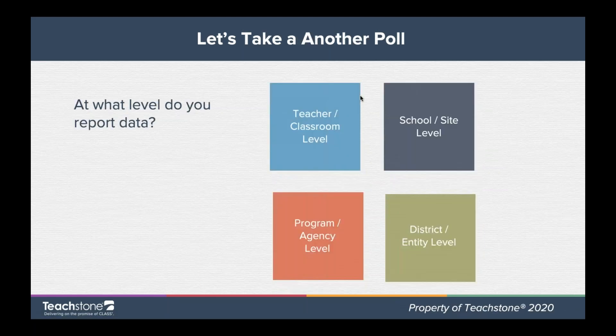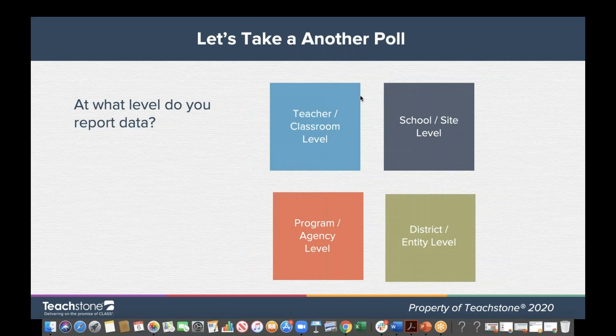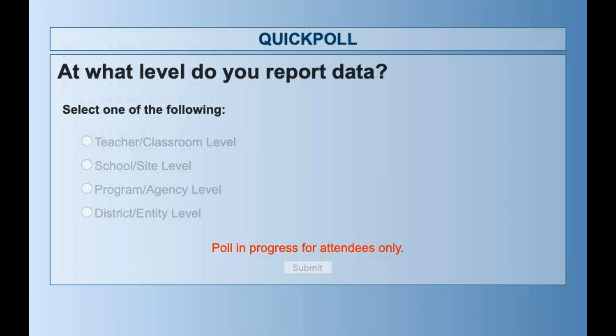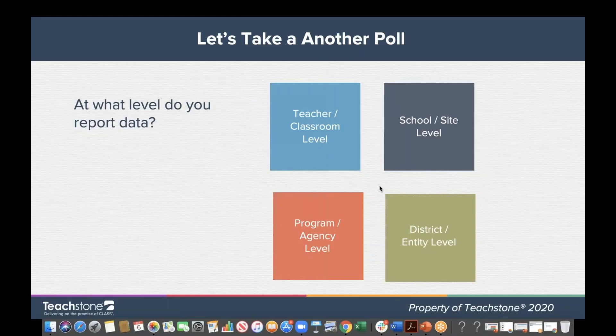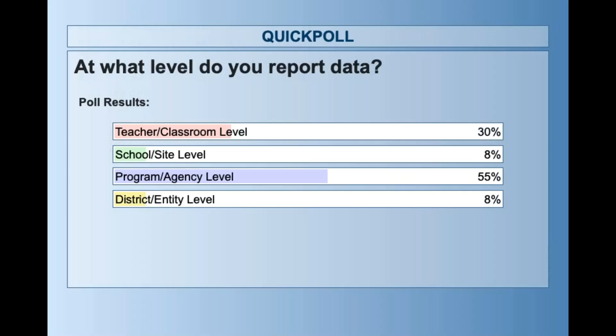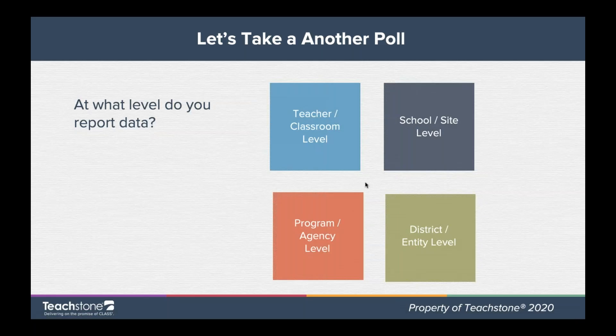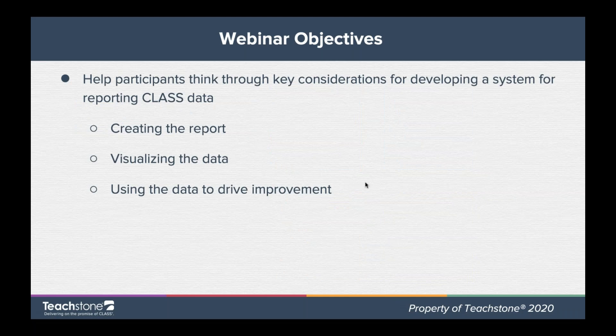The other poll is: at what level do you report data? Options are teacher/classroom level, school/site level, program/agency level, and district/entity level. Results show about 30% teacher/classroom level, 8% school/site level, 55% program/agency level, and 8% district/entity level. Thanks for the polls — that's great to know.